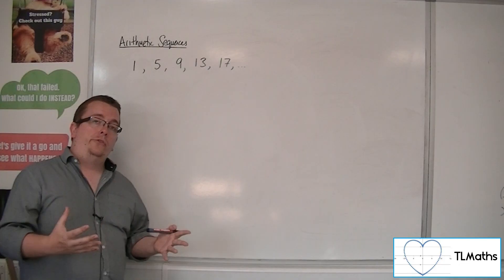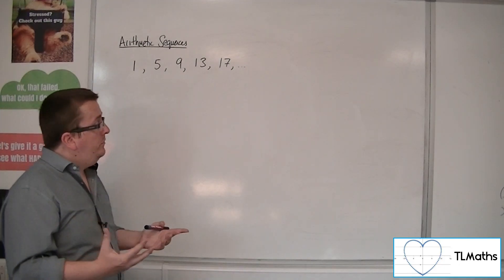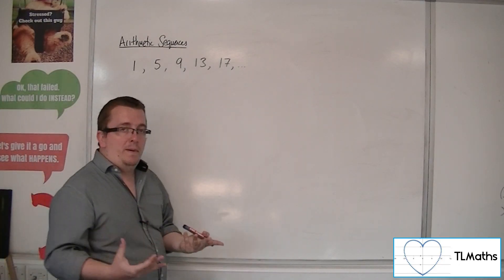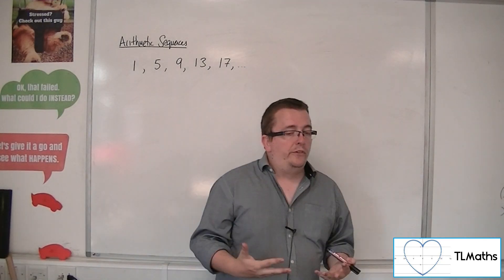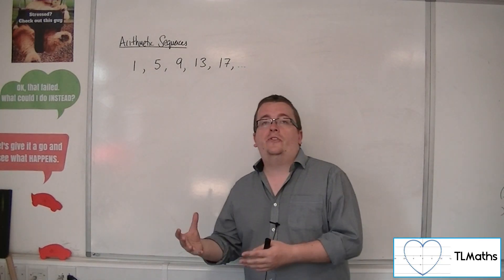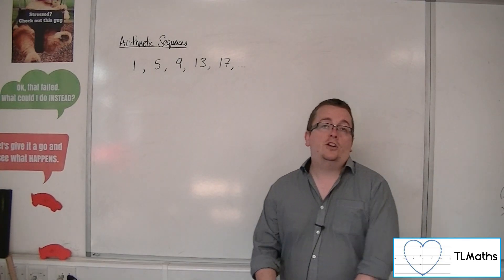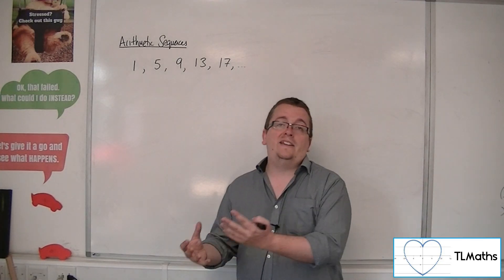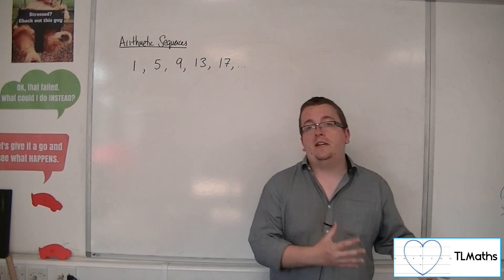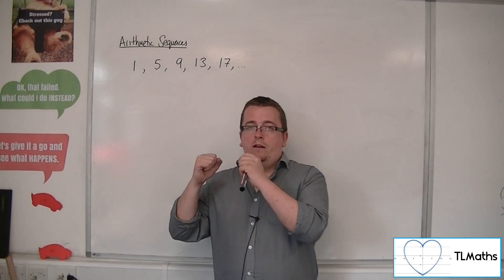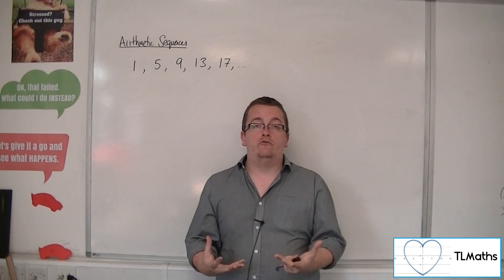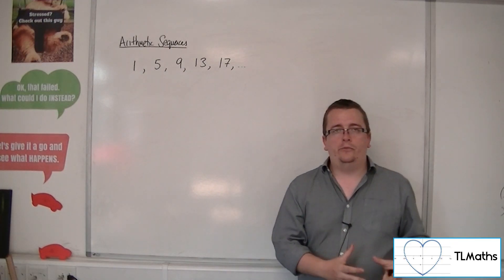You can see it's going up in 4s. And that's what defines an arithmetic sequence — it's a sequence where you are constantly going up the same amount each time. It could be that you're adding 5 each time, or it could be that you're subtracting 7 each time. The key thing is that it has this common difference between each of the terms.